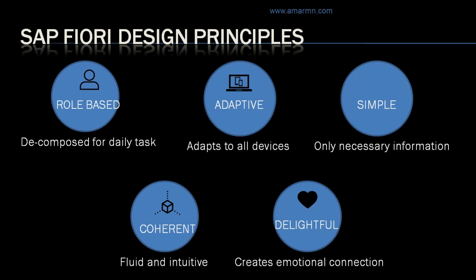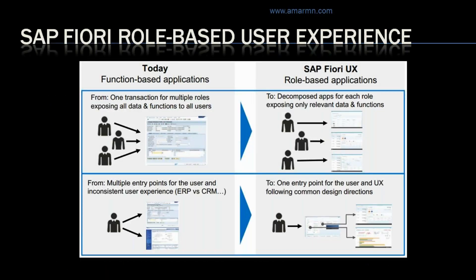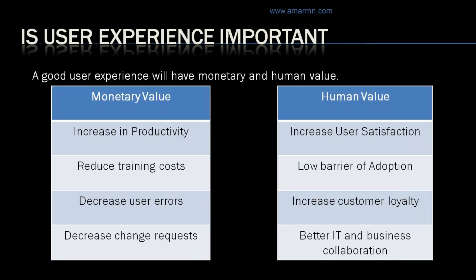This leaves a positive user experience for users, and user experience is very important — something we will discuss in this slide. A good user experience has monetary and human value. Monetary value involves increasing productivity, reducing training costs, decreasing user errors, and decreasing change requests. Human value involves increased user satisfaction, low barrier of adoption, increased customer loyalty, and better IT and business collaboration. These are the human values that SAP Fiori apps deliver.